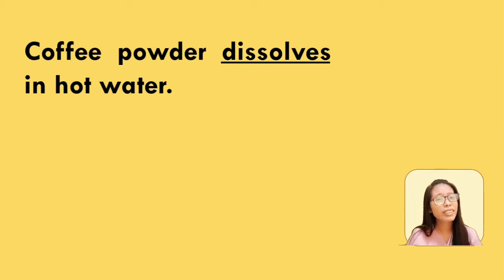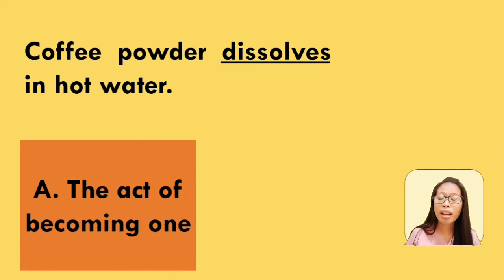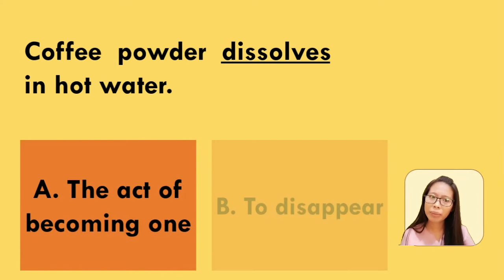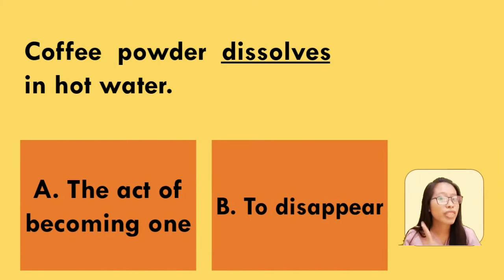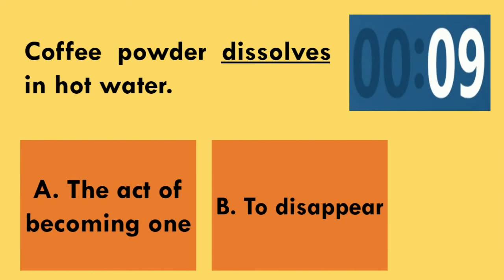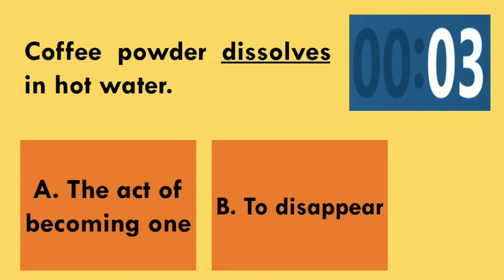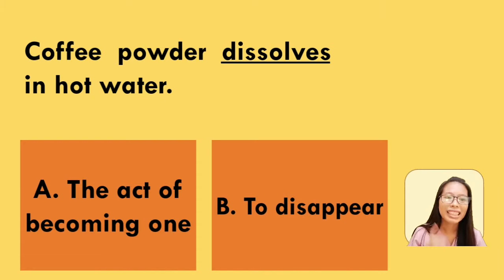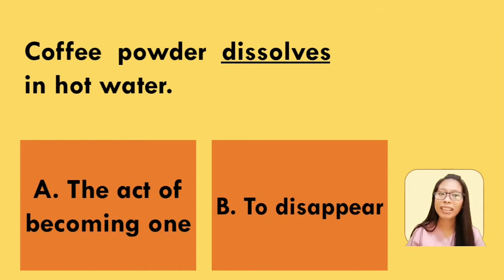Next is: coffee powder dissolves in hot water. What is the meaning of the underlined word dissolves? Is it the act of becoming one, or to disappear? You have 10 seconds to guess the correct answer. The answer is letter B — it is to disappear.